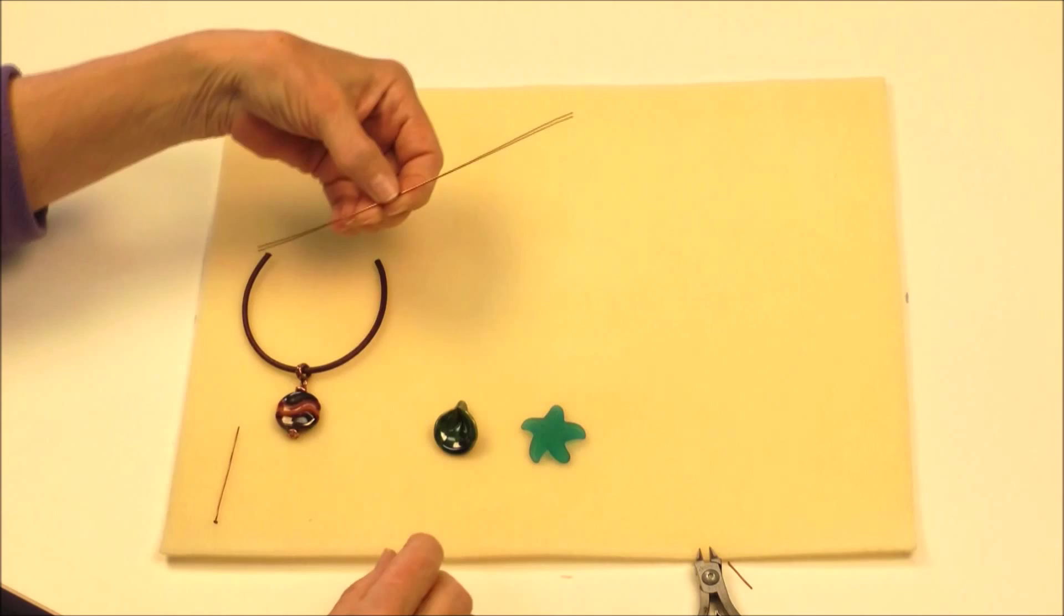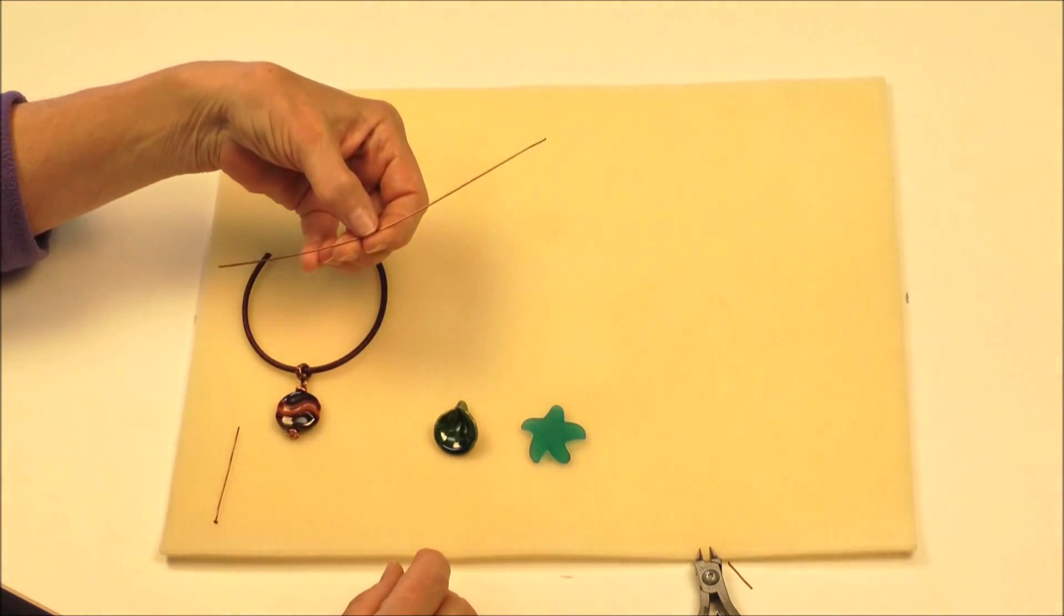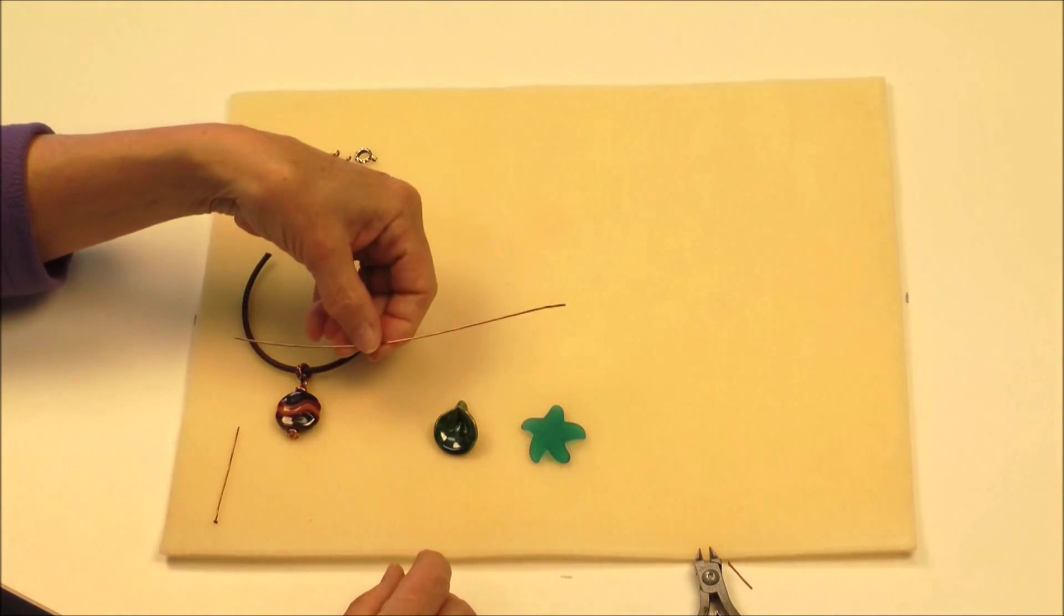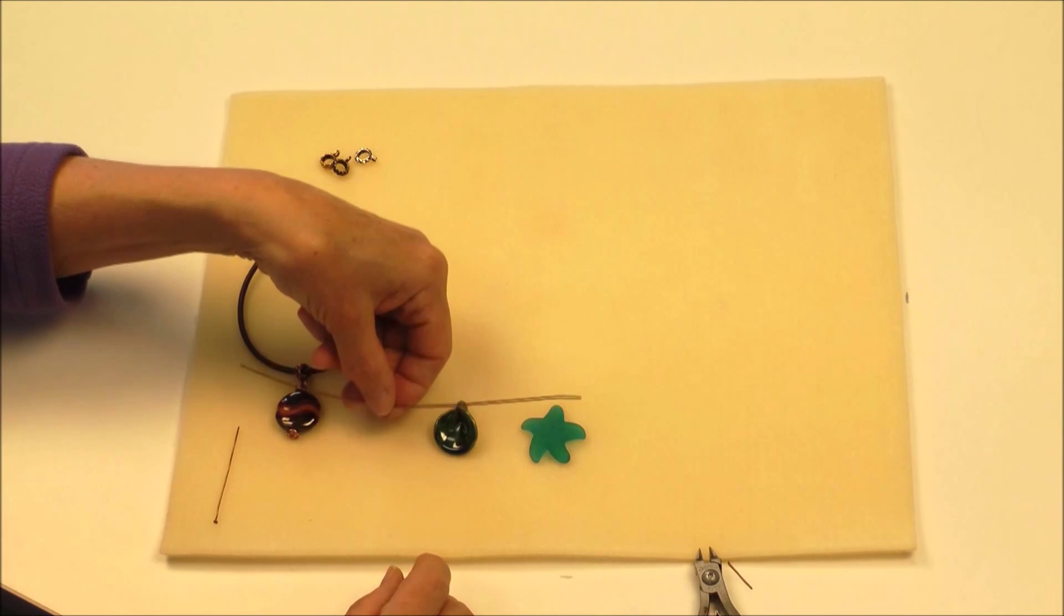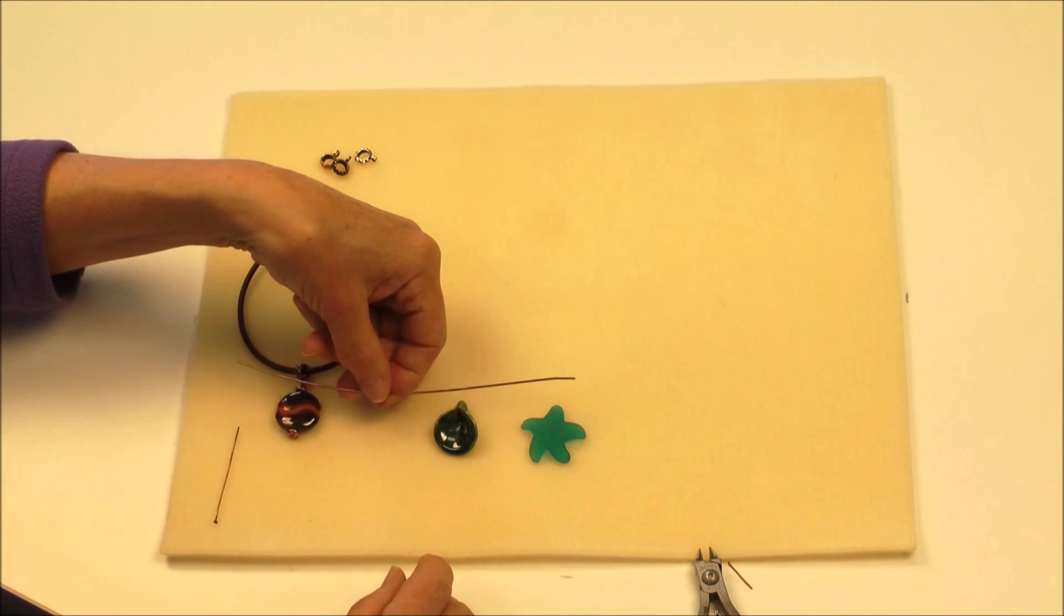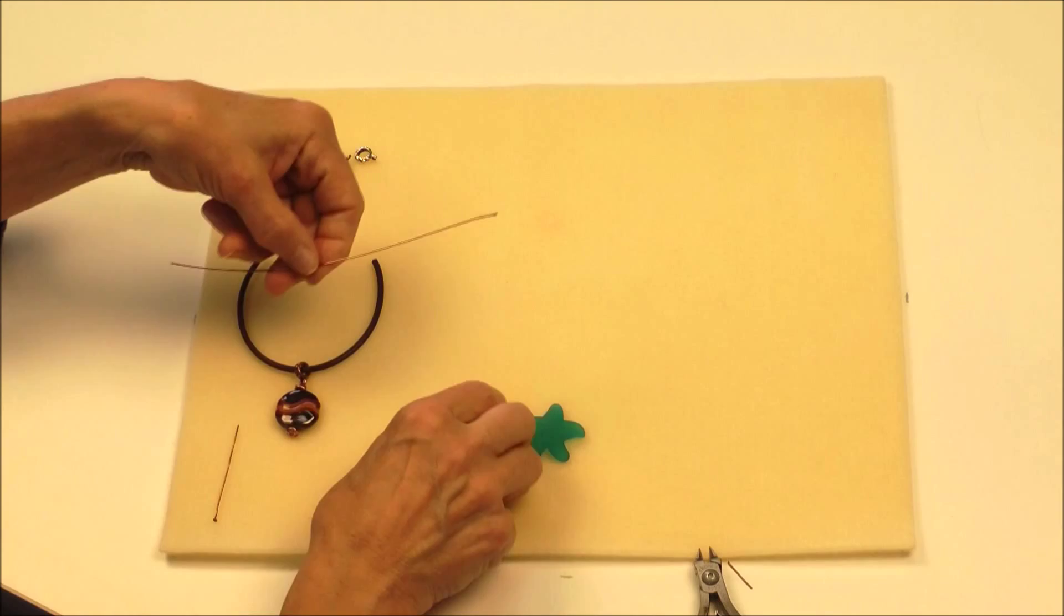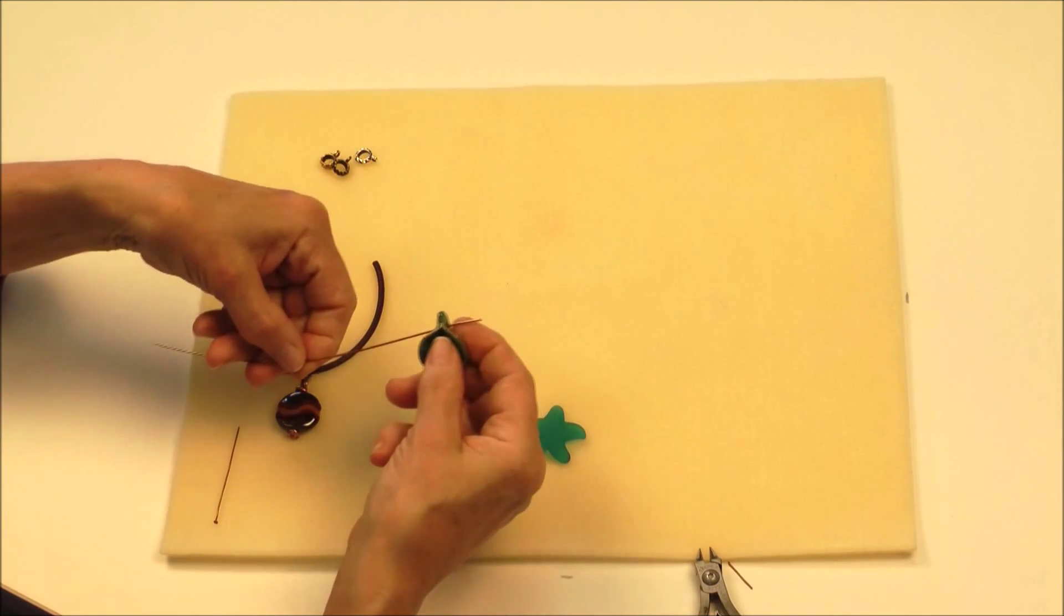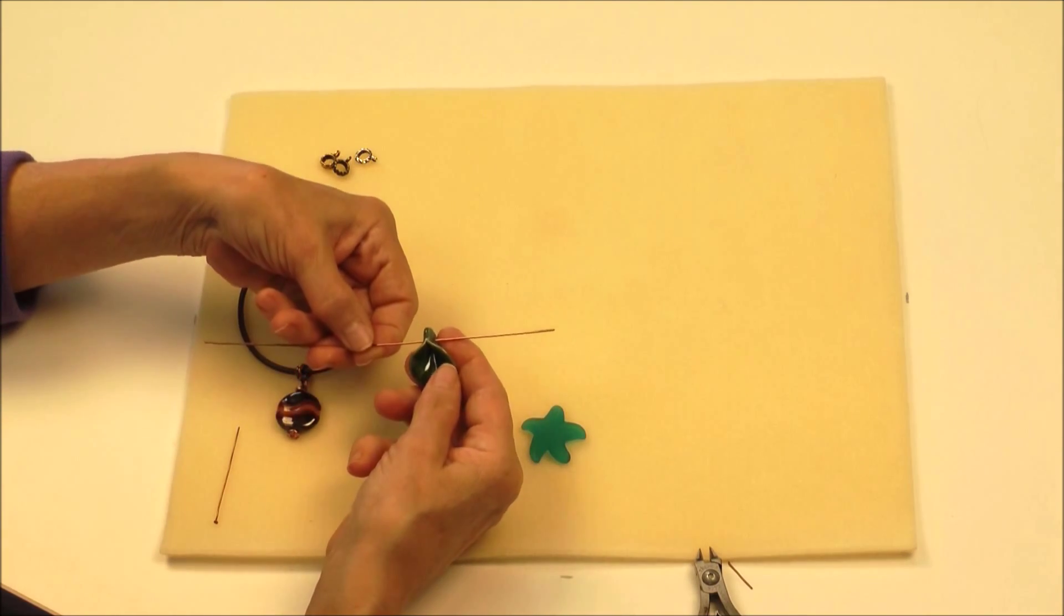So to start, I'll have a piece of 18 gauge wire. I want the wire to be proportional to the bead. I don't want it to be too small or too big so that it overpowers the bead. So I'm using an 18 gauge anti-copper wire. I will string the trompetta bead on the wire.